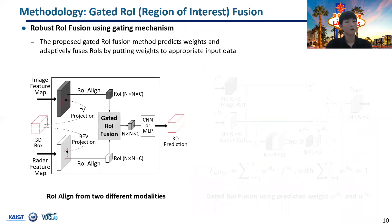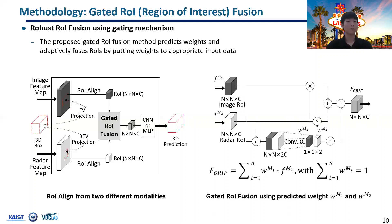After feature extractors extract features from radar and image inputs, 3D anchors are projected onto each feature map and projected ROIs are extracted. When extracting ROIs from the feature map, we adopt the ROI-align method to minimize quantization effects on the ROI boundaries by using bilinear interpolation. Extracted ROIs are fed to the gating network to predict the weights of each sensor input. The predicted weights are feature-wise multiplied to each ROI feature and normalized after element-wise summation.